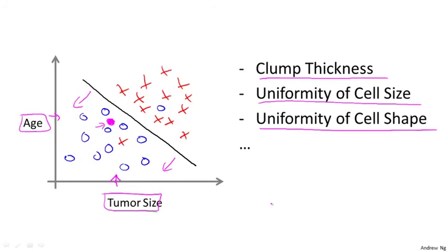To recap: in supervised learning, for every example in our data set we are told what is the correct answer we'd like the algorithm to predict, such as the price of a house or whether a tumor is malignant or benign. We talked about the regression problem — our goal is to predict a continuous-valued output. And we talked about the classification problem — the goal is to predict a discrete-valued output.